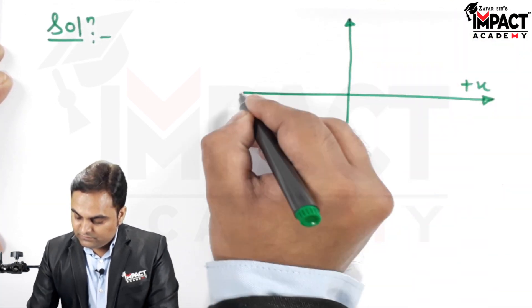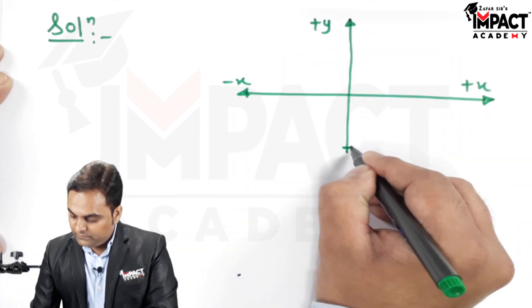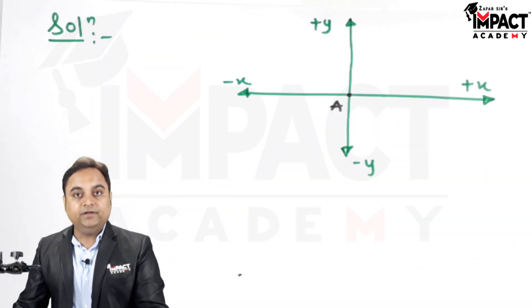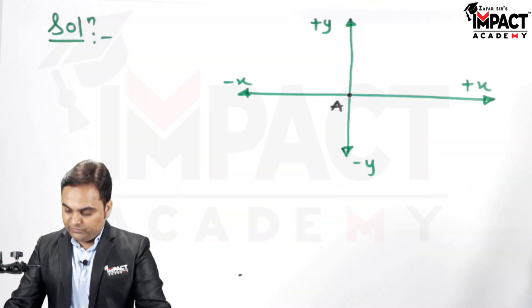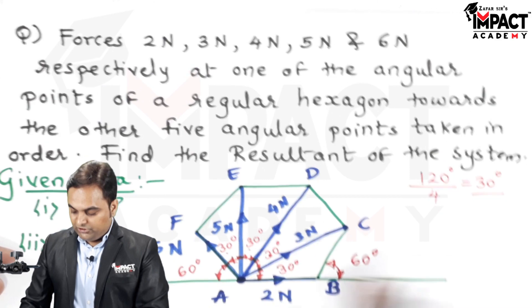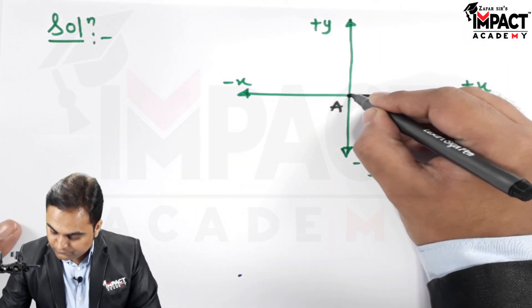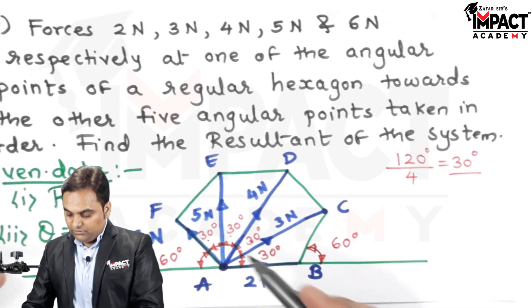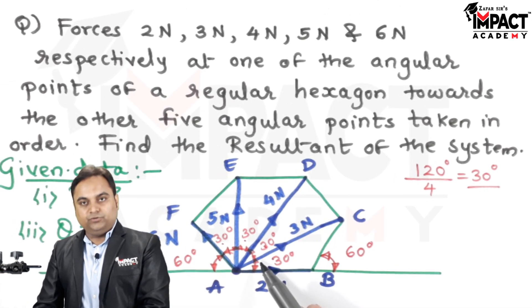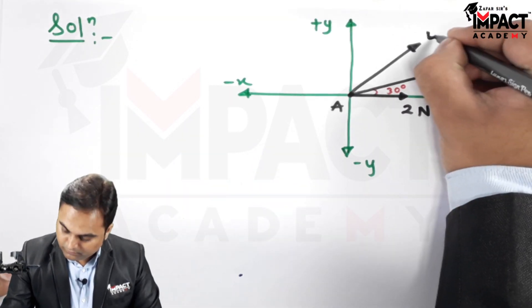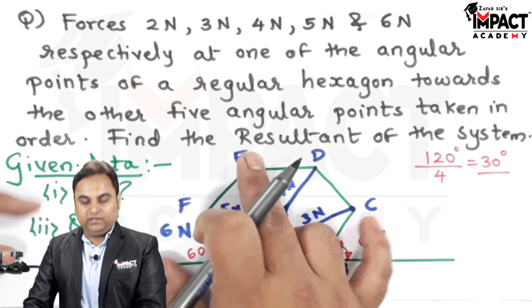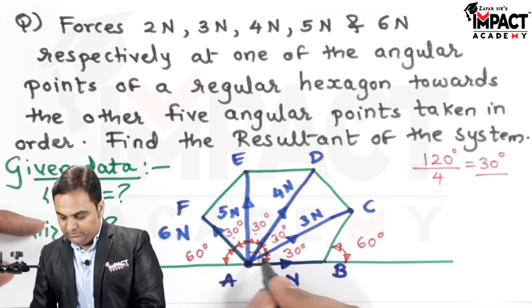We have the plus x-axis, negative x, plus y, and negative y. This is the angular point A. The 2 newton force is purely horizontal acting towards the right. The 3 newton force is acting at an angle of 30 degrees. The 4 newton force is 30 degrees with respect to the 3 newton force, so 60 degrees with respect to the horizontal. The 5 newton force acts upward at 90 degrees total, so it is a purely vertical force.